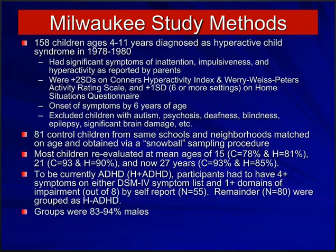We also recruited 81 children from similar backgrounds, neighborhoods, and schools using a snowball technique — inviting people known to the ADHD children and screening them to determine if they were abnormal or not, then asking for friends of theirs until we accumulated the control group. We used this procedure to make sure that children in the control group came from similar backgrounds and neighborhoods to the children with ADHD.